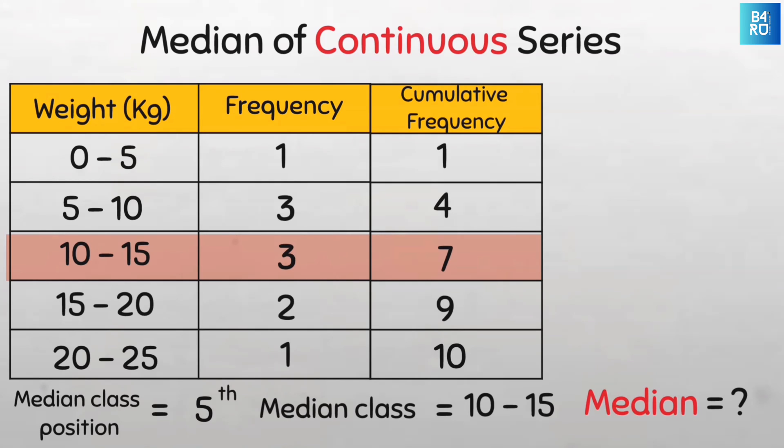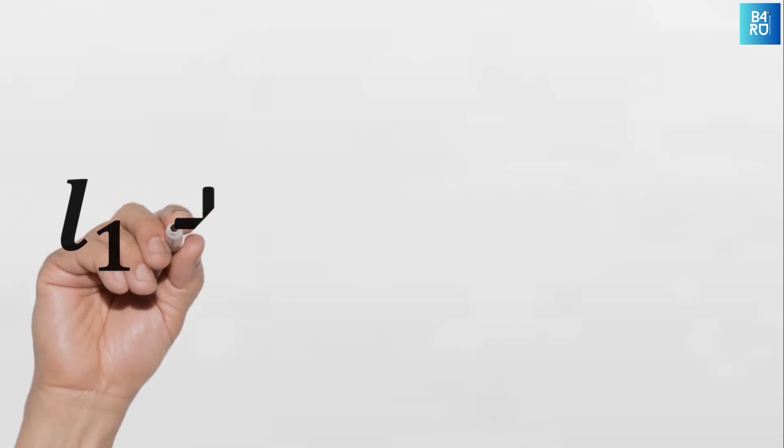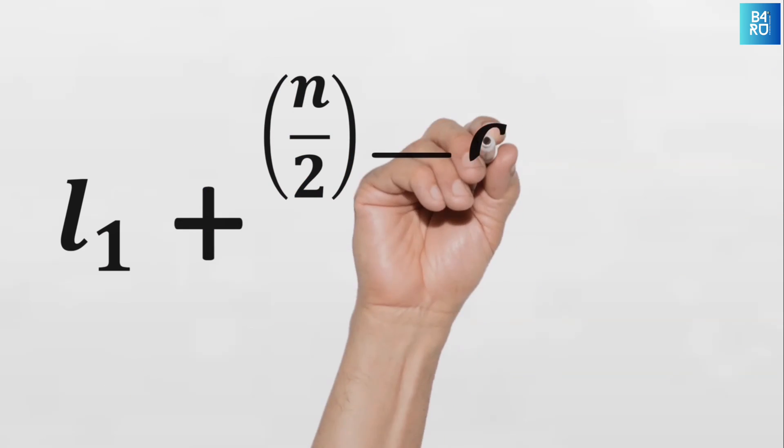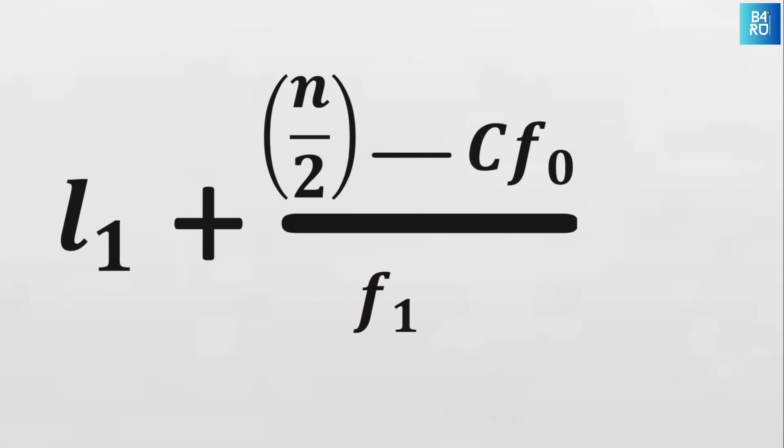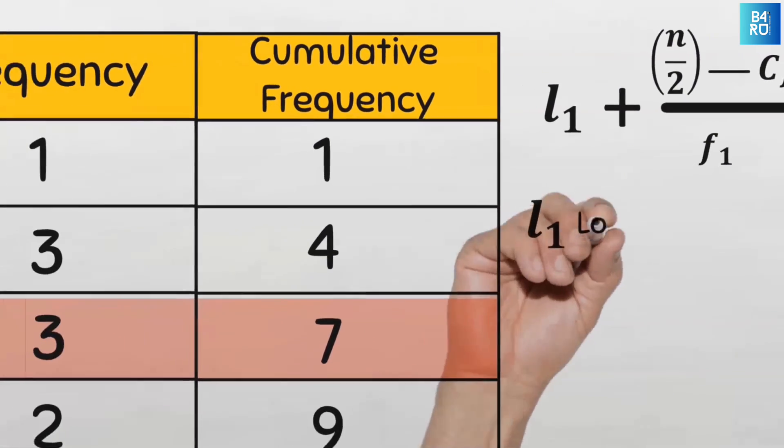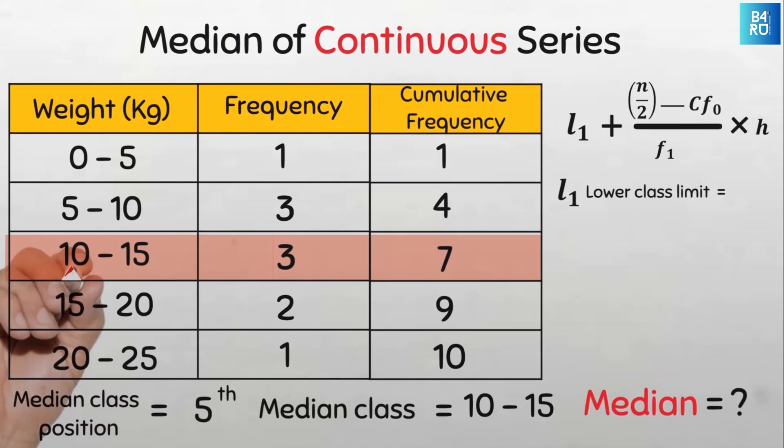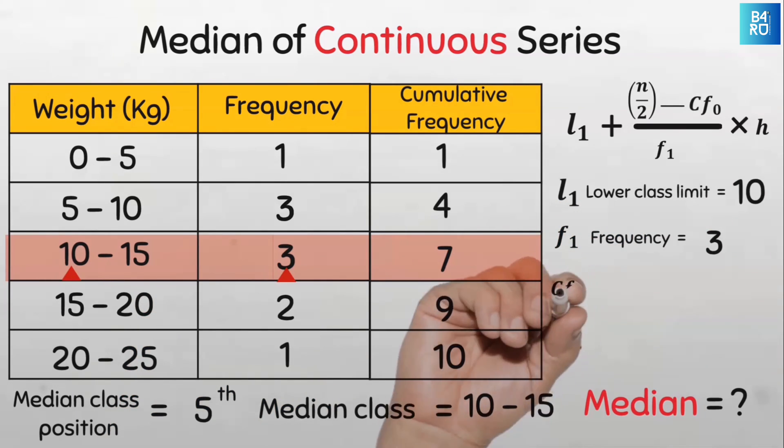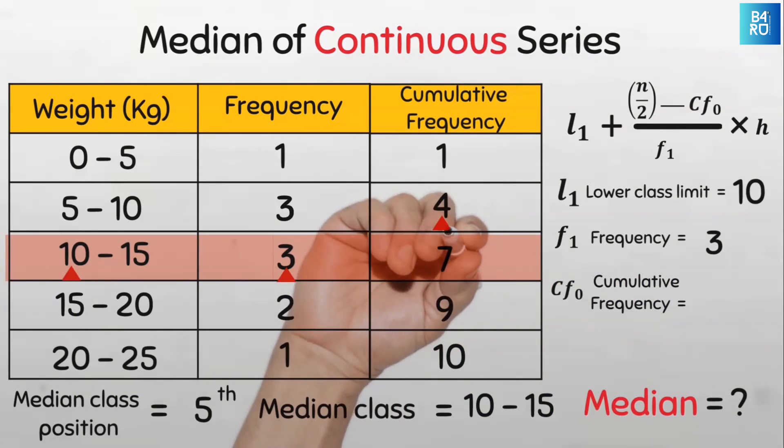To find the median value, we will make use of the simple formula L1 plus n over 2 minus Cf0 divided by F1 multiplied by H. Where L1 is the lower class limit of the median class, which is 10. F1 is the frequency of the median class, which is 3. Cf0 is the cumulative frequency of the class preceding the median class, which is 4. H is the width of the median class. The width is the lower limit of this class minus that of the preceding class. So that is 10 minus 5, so we have 5.